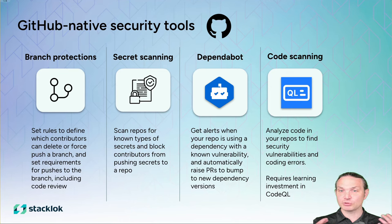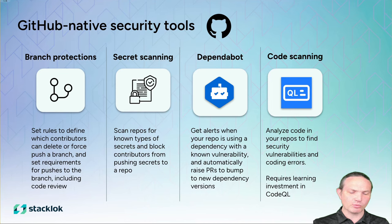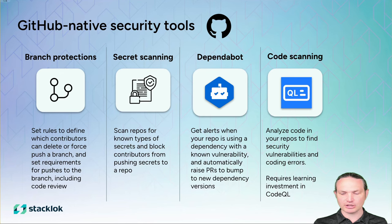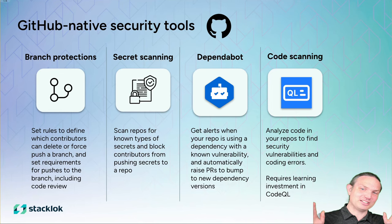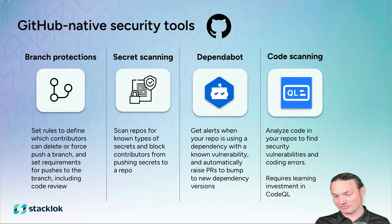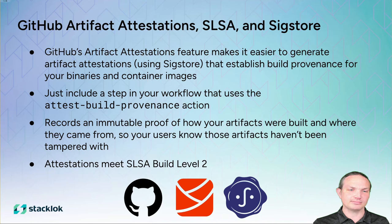GitHub also has a tool called CodeQL that lets you do static analysis — for example, flagging when you call a function and don't catch an exception or don't check the error return in Go. That could be a security issue where you check authorization, get back a 'no, error, couldn't reach database' result, and then let the user through thinking they're not on a block list when actually you couldn't reach your block list. CodeQL helps you avoid actual security bugs like that.